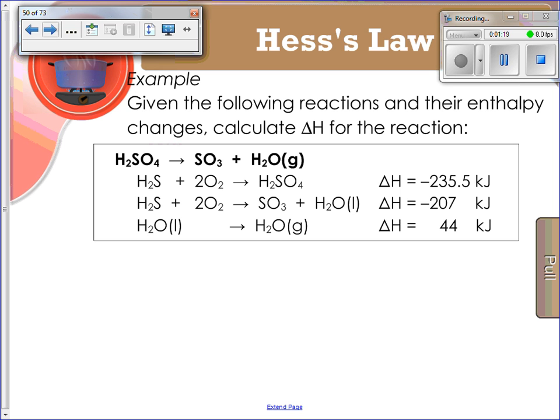Let's look at this example problem. Given the following reactions and their enthalpy changes, calculate delta H for the whole reaction. This is the reaction we're looking for, but it actually goes through three sub-reactions. I start with the first entity, H2SO4. Look for H2SO4 in your sub-reactions. The number of moles is exactly the same, so you don't need to multiply by a factor.